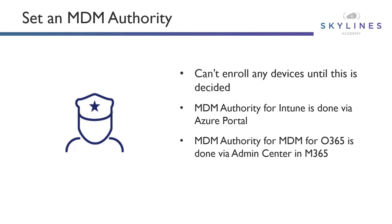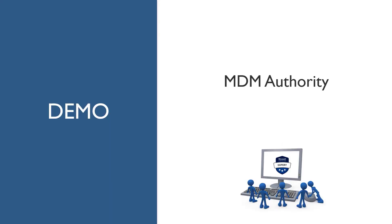If you're going to set the MDM authority for MDM for Office 365, you can enable that through the admin center, and you have the ability to change it at any given point in time. Many organizations have gone from SCCM or MDM for Office 365 to a standalone Intune instantiation, which is quite common, especially for organizations that have gone through a recent licensing upgrade.